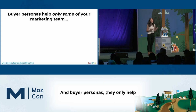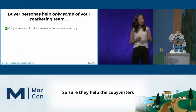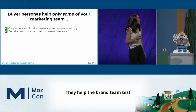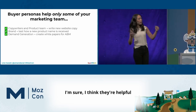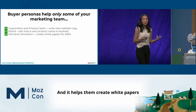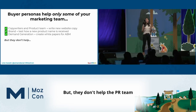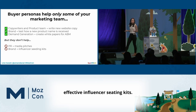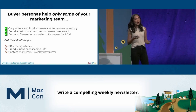Buyer personas only help some of your marketing team. Sure, they help copywriters and the product team write new website copy, and they help the brand team test how a new product name is received. But they don't help the PR team create effective media pitches, they don't help the brand team design effective influencer seating kits, and they definitely don't help content marketers write a compelling weekly newsletter.